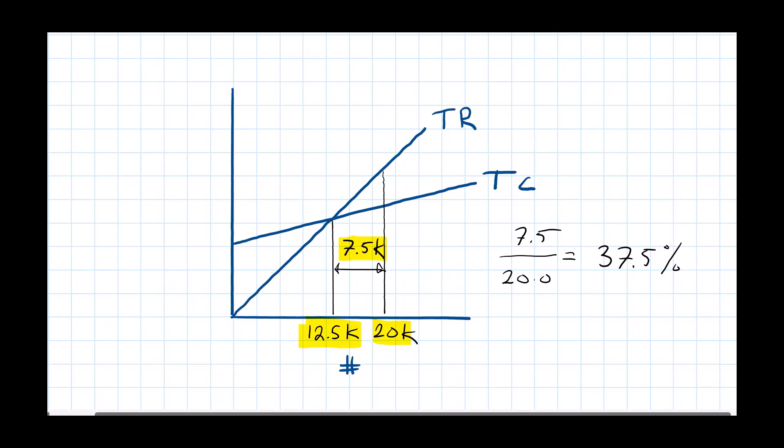And lastly, we could also look at it in terms of sales revenue. Then we would take that margin of safety in units times that selling price we had of $100 per unit. And that would be a margin of safety in revenue of $750,000.